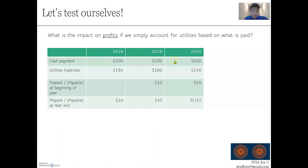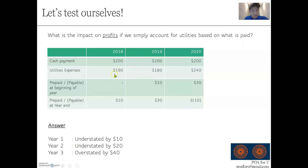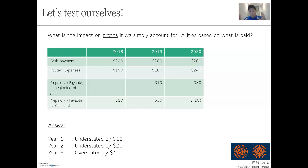In the first year, profits would be understated. If you did not account for the prepaid, your utilities expense is taken as $200 when it should only be $190, so expenses are too high and therefore profits will be too low because they're inversely related. Same logic for another year where you'd put $200 instead of $180 — too high expenses, too low profit. But for year two where the actual expense is $240 and cash payment is only $200, you'd understate expenses, meaning your profits would be overstated — higher than they should be.